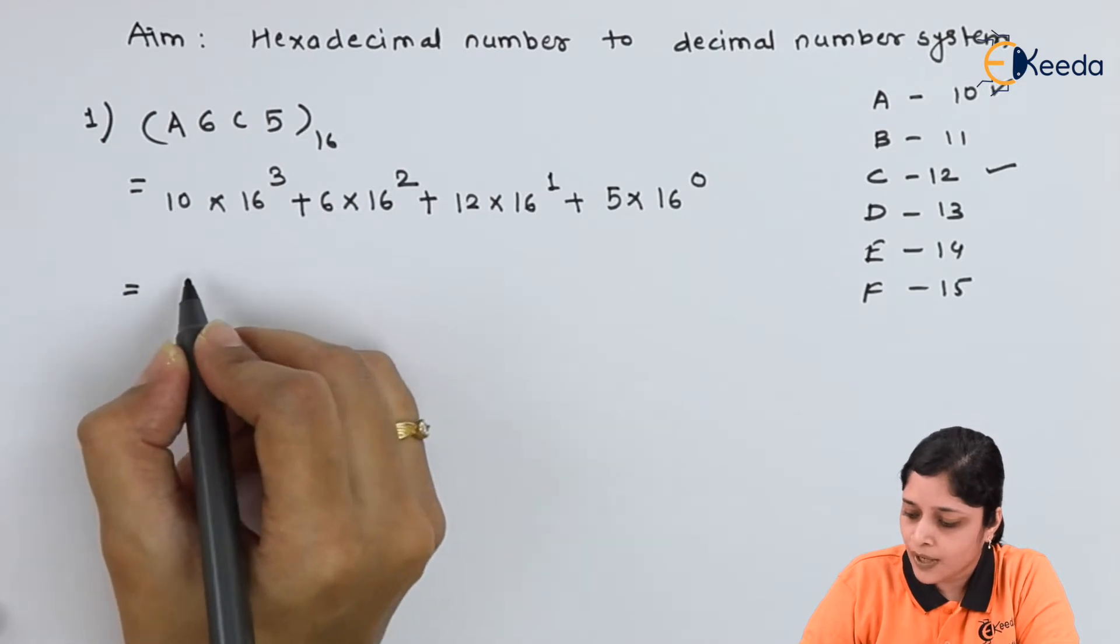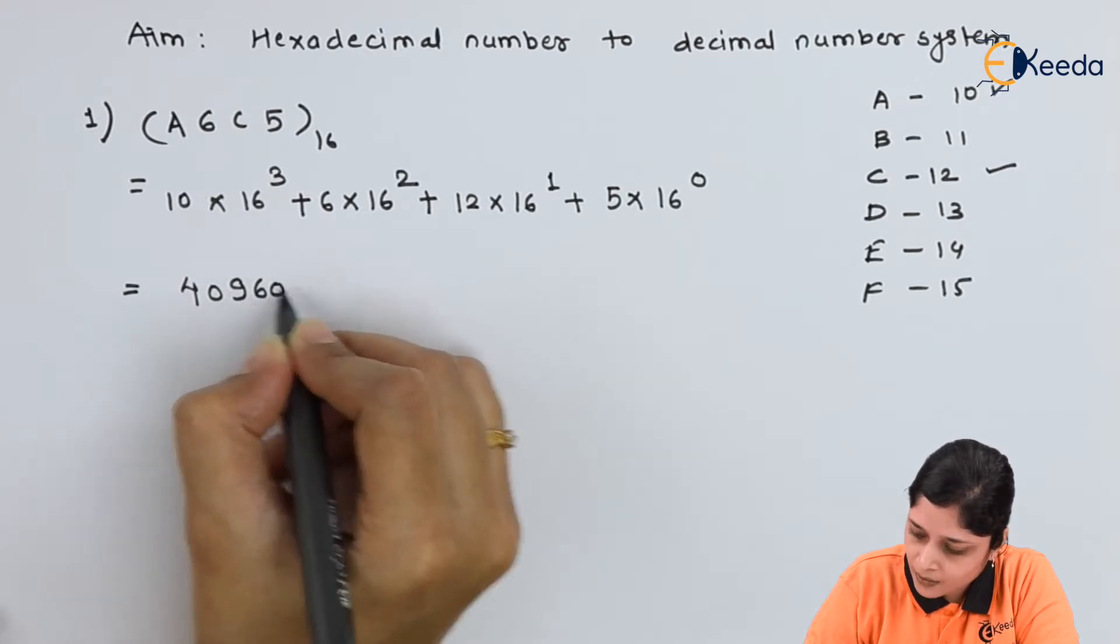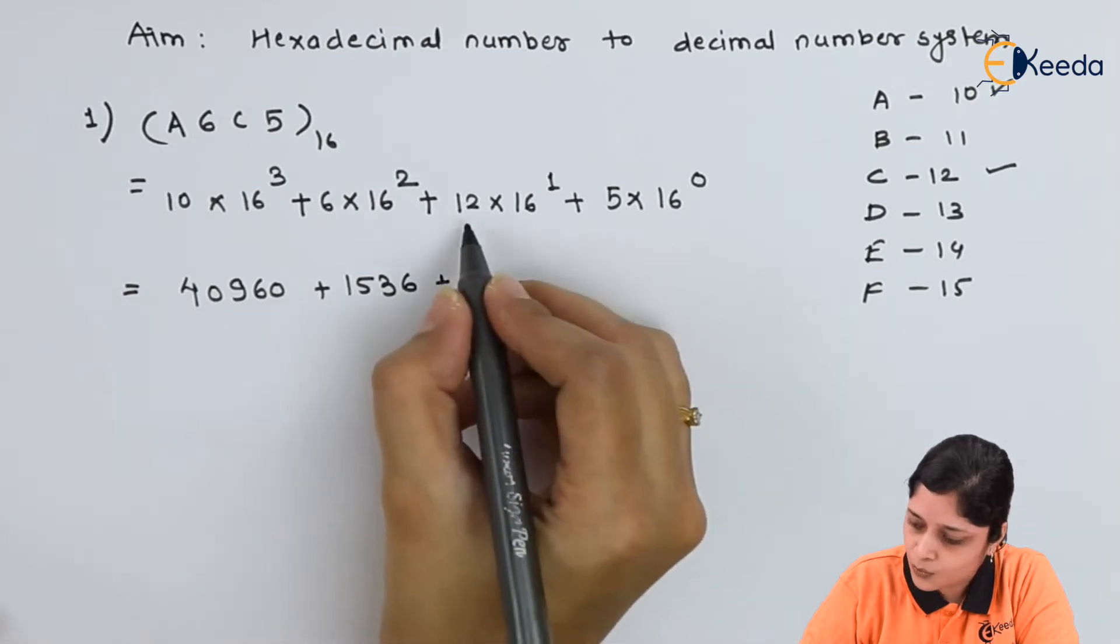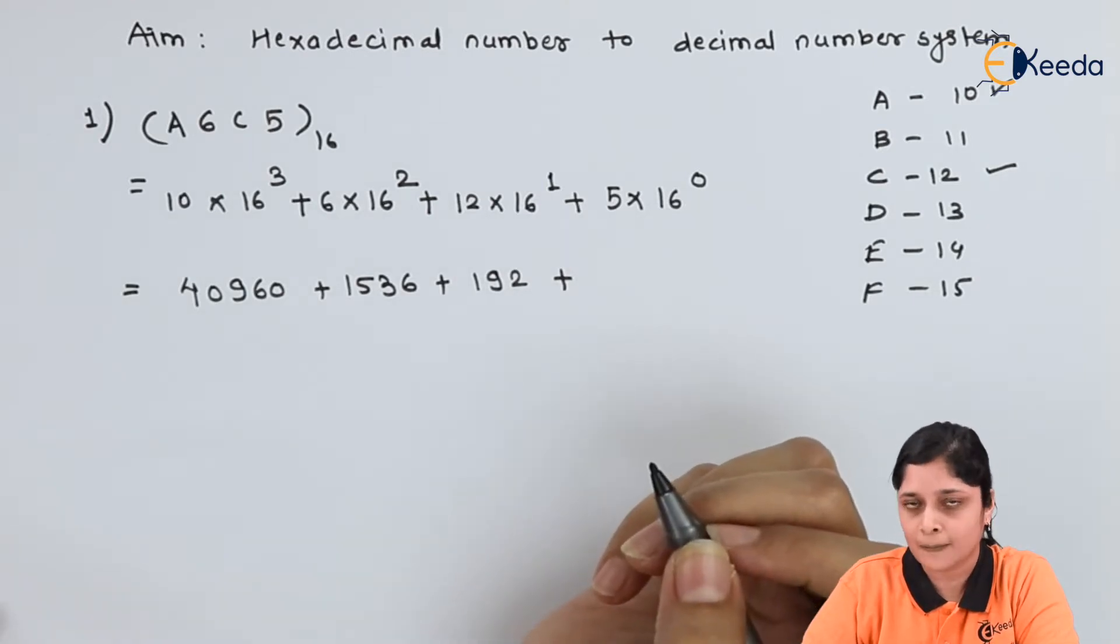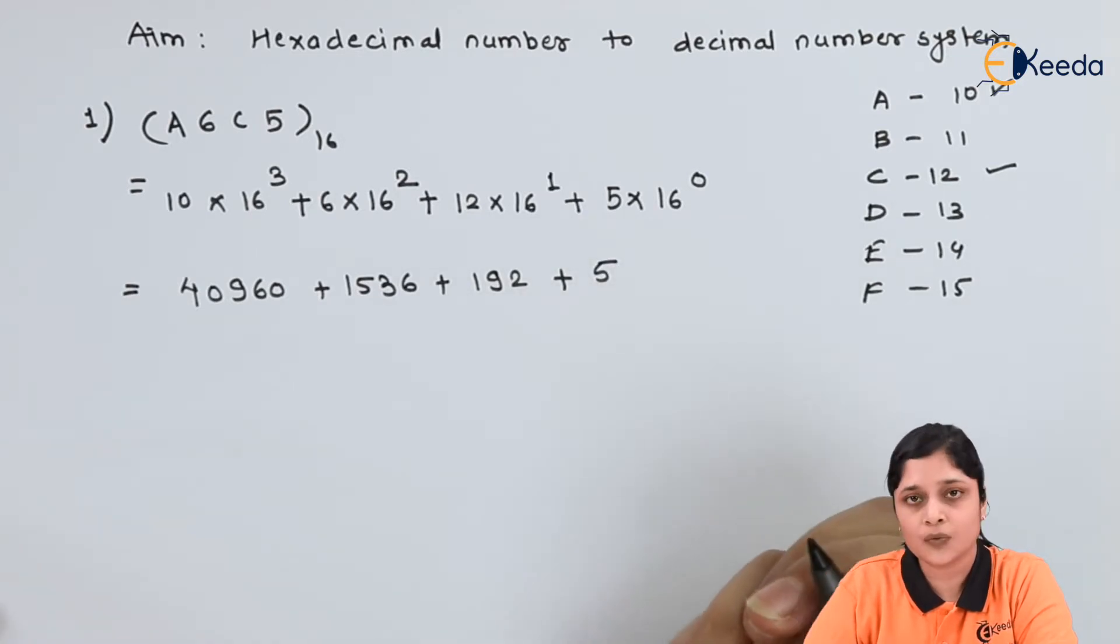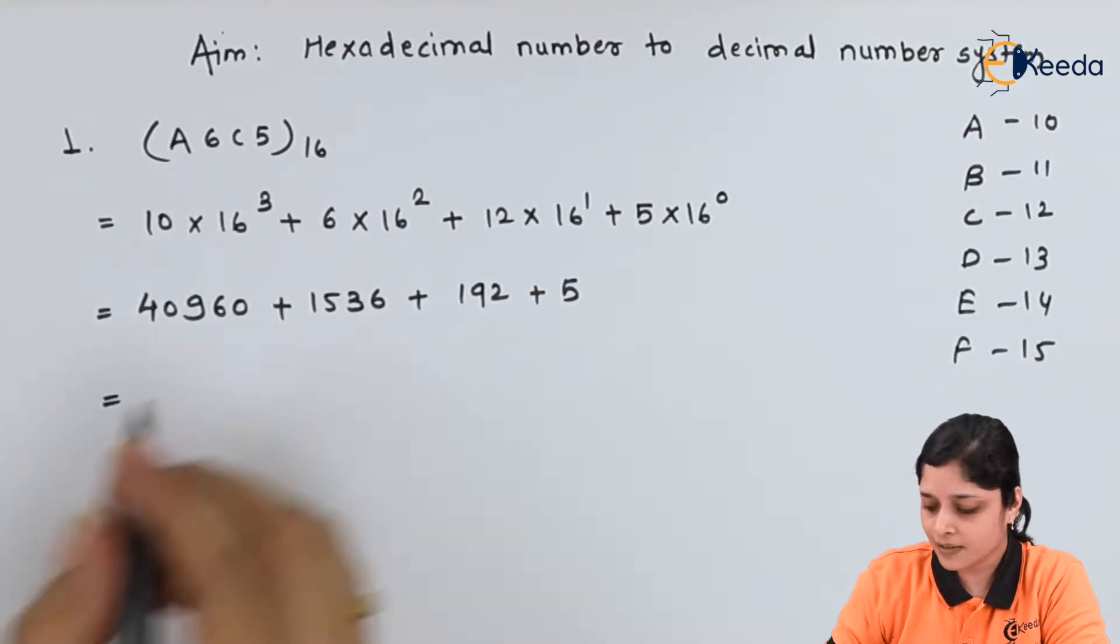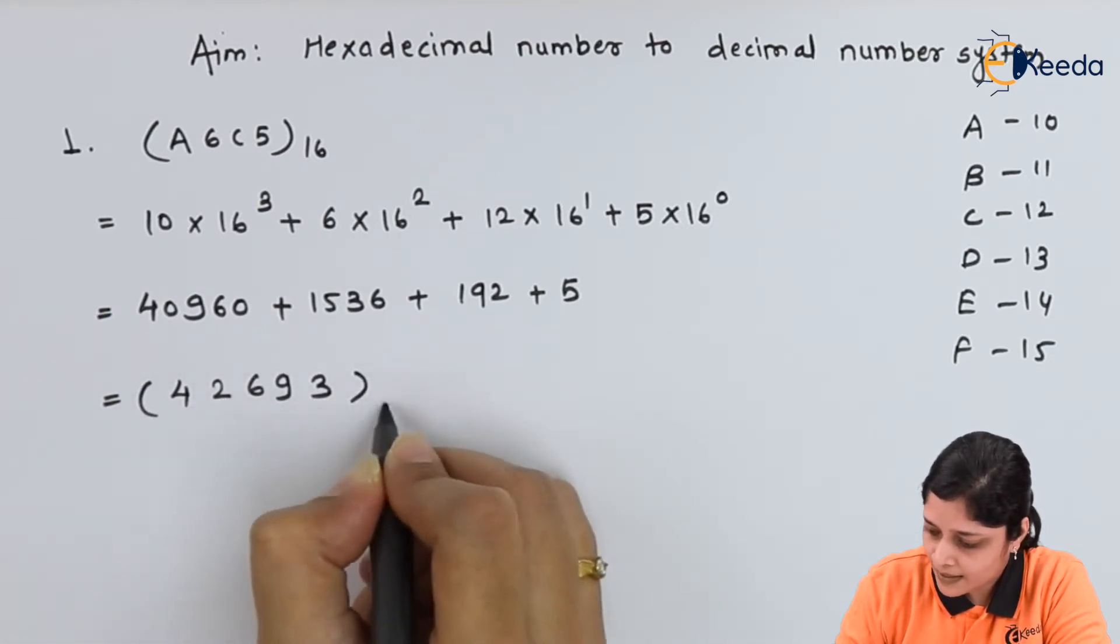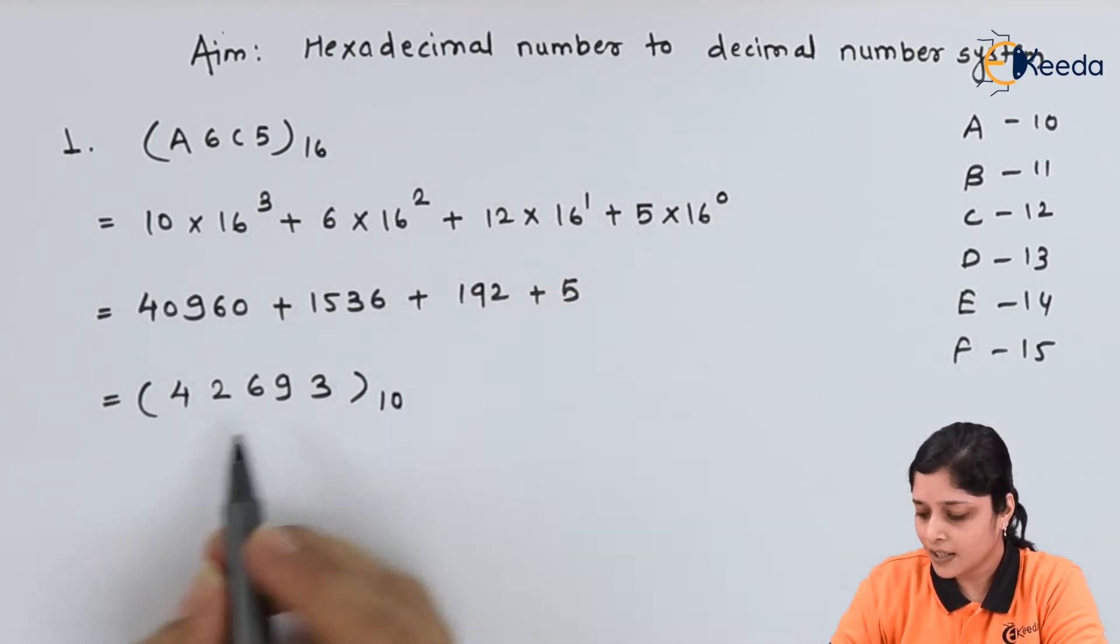Now you have to expand the expression, the value of this expression. The value is 40960 plus 1536 plus 12 into 16 will give you 192 plus 16 rest to power 0 is 1, because anything rest to the power 0 is 1. So 5 into 1 is 5. So final answer is 42693 to the best 10. You have hexadecimal number and in final you will get 42693 as the decimal number.